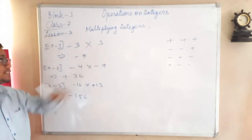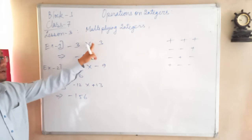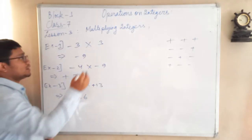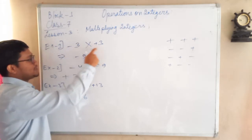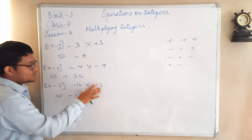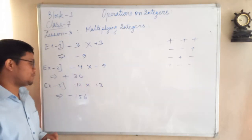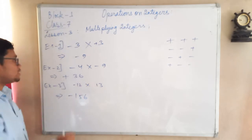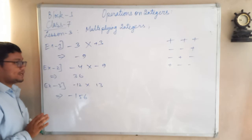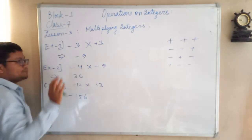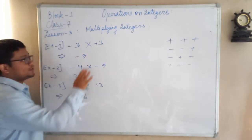Not every question will show a plus sign explicitly. If there is no sign before a number, it means it has a plus sign. So you should imagine a plus sign is there. For example, minus times plus is minus, and minus times minus is plus. It is not compulsory to write the plus sign — just imagine it is there.